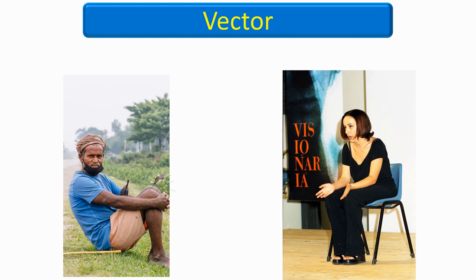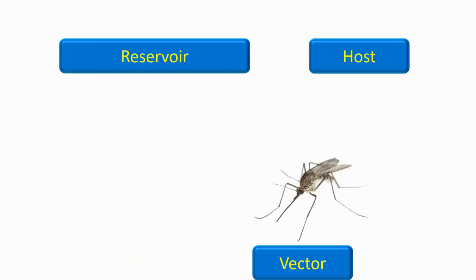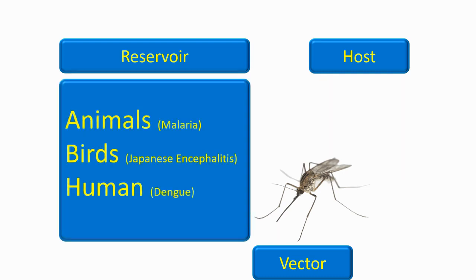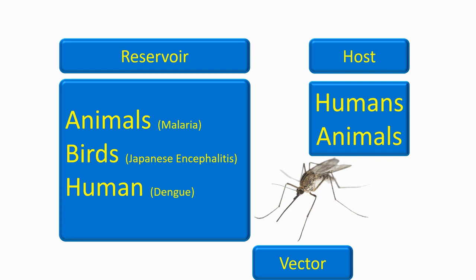A disease vector is any living agent that carries and transmits an infectious pathogen to another living organism. In order to be called a vector, the living organism must acquire the disease pathogen from a reservoir — which can be an animal, bird, or infected human — and then carry the pathogen in its own body to transmit it to another susceptible host, which can be human or animal.